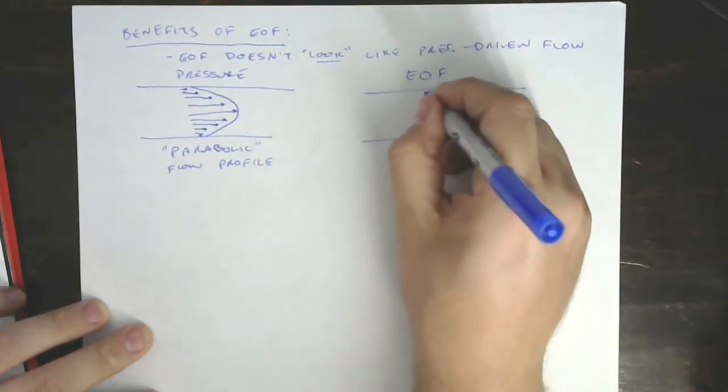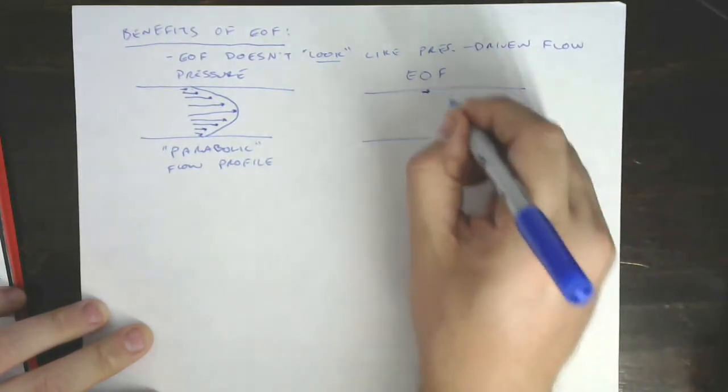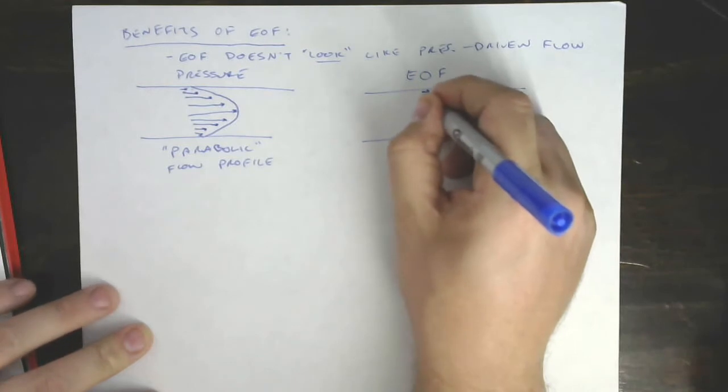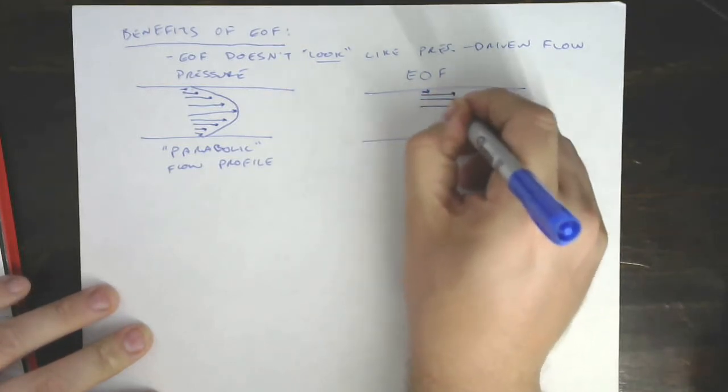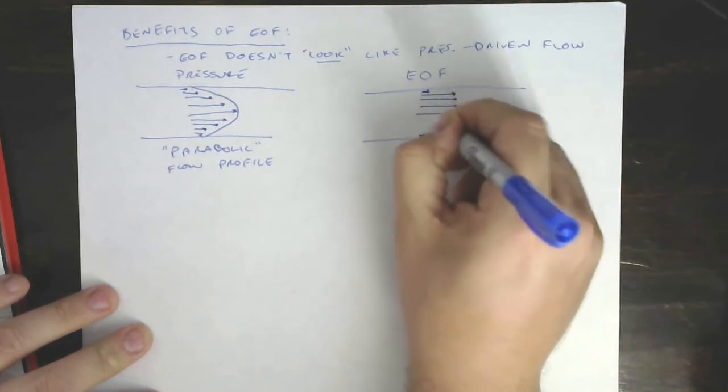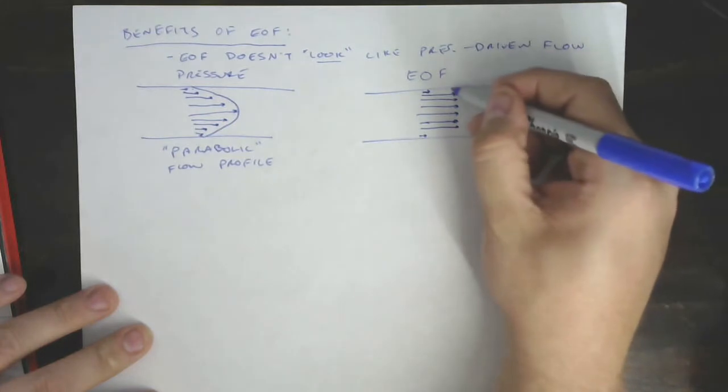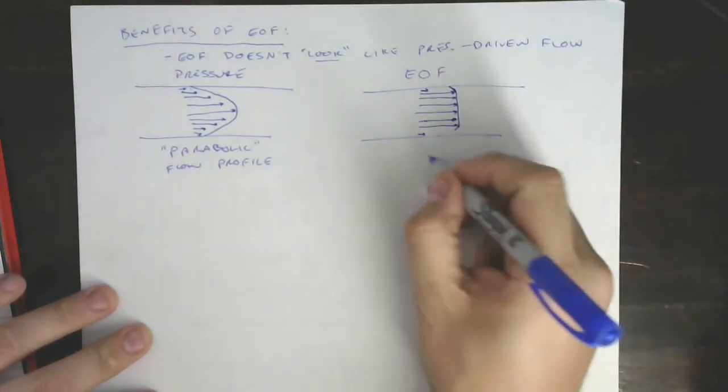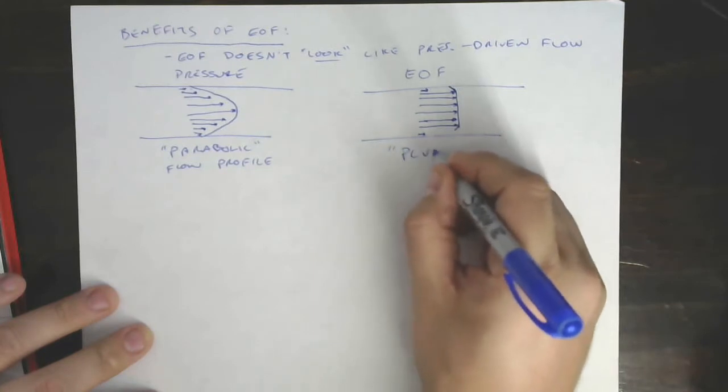And so right at the wall where we get pretty much our full velocity, there's the small Stern layer that doesn't move or barely moves, so low velocity there, but right at the wall we get our full velocity and that velocity profile is conserved across the entire width of the channel. And so if we drew this velocity profile it would look something like that. This is often called plug-like flow.